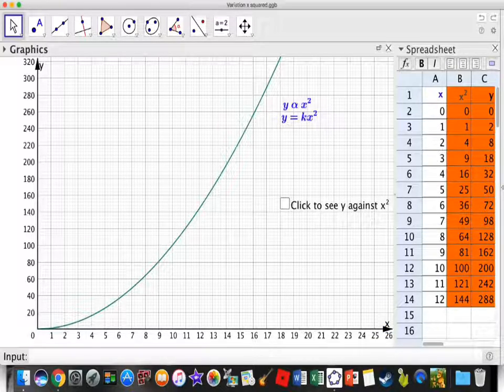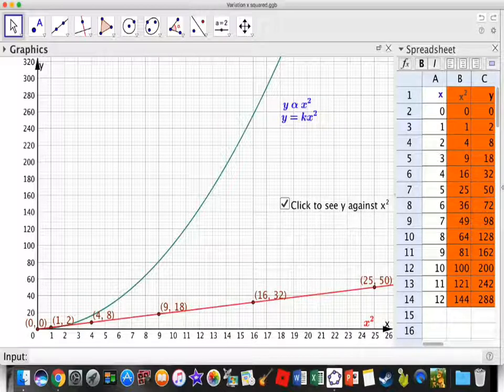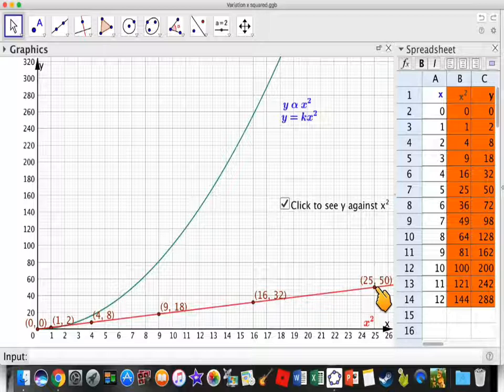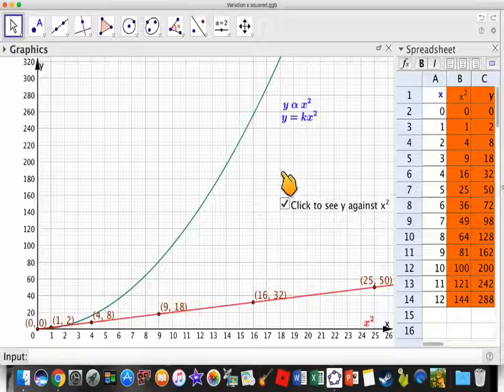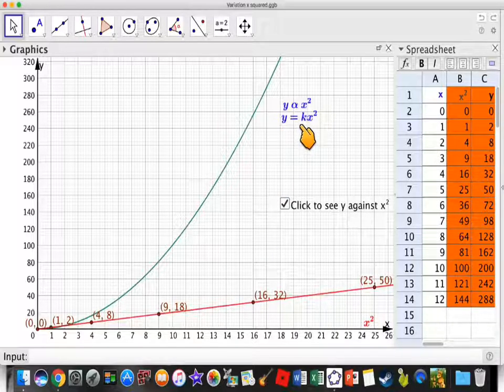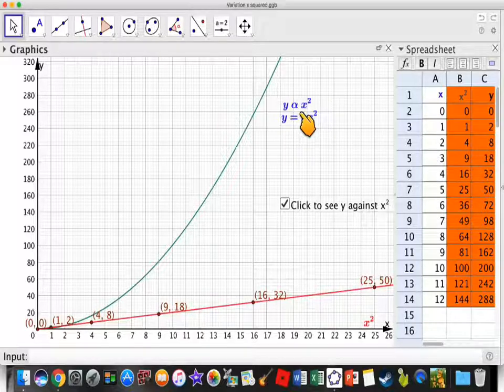Then if I click, then you can see those points plotted, and you'll see that they actually form a straight line. So you can actually see there is a linear relationship between X squared and Y, and therefore this is why we can say that Y is proportional to X squared.